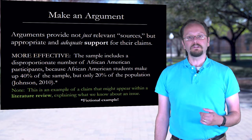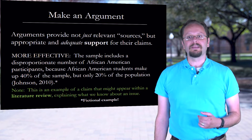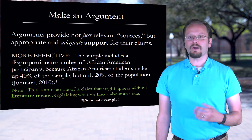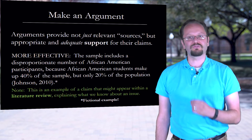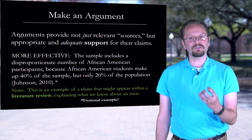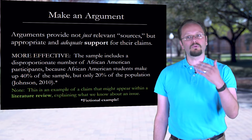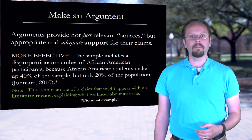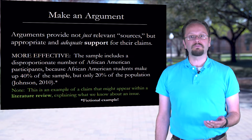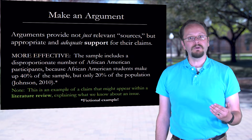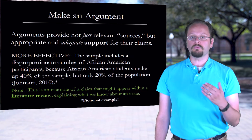That's the kind of argument a literature review might make. And this is how arguments work — they have a nesting structure where smaller claims, reasons, and evidence support larger and more comprehensive claims. Often, each paragraph in a writing project will need to make a claim and support it with reasons and evidence.